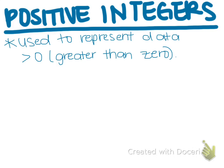Positive integers are used to represent data greater than zero. On a regular or horizontal number line, all positive integers are to the right of zero. These are positive integers.